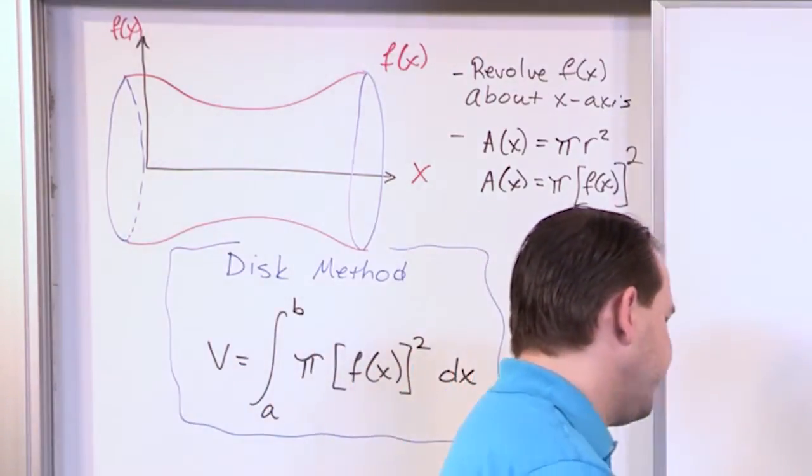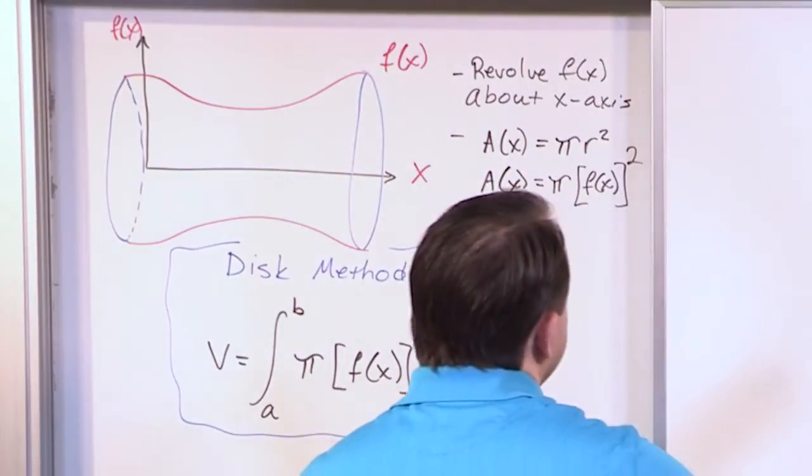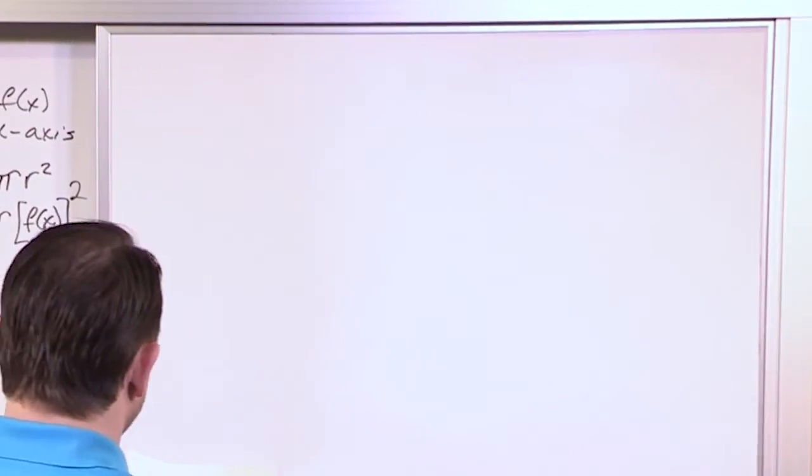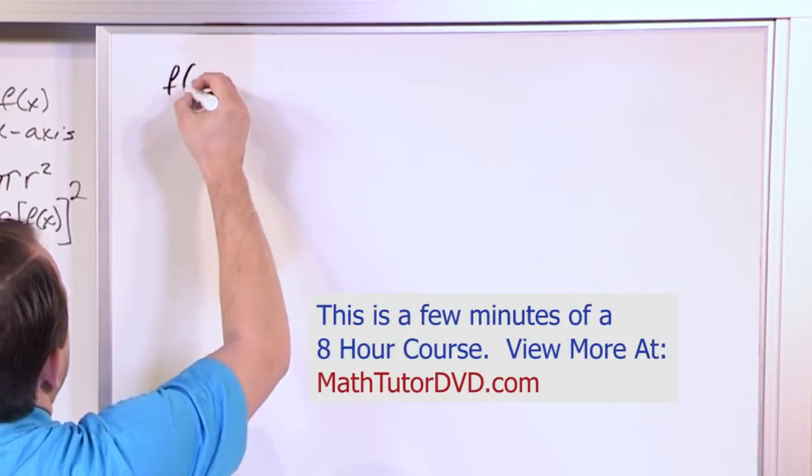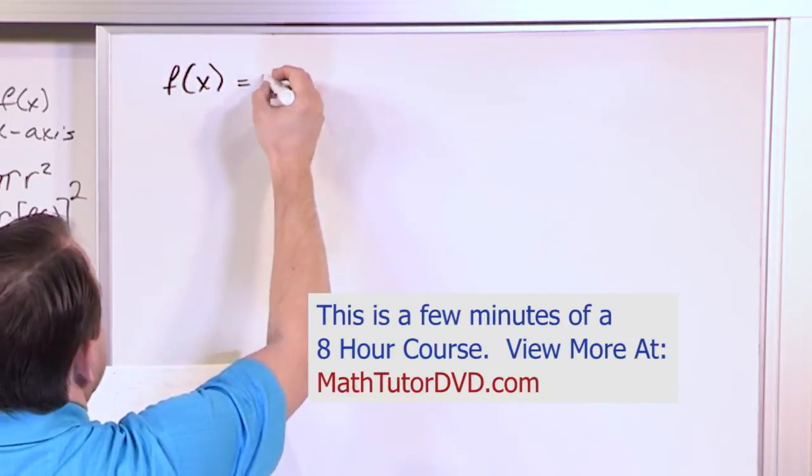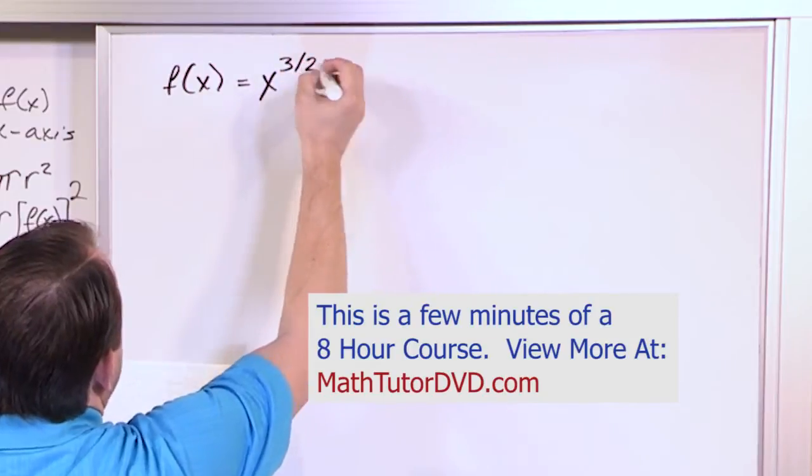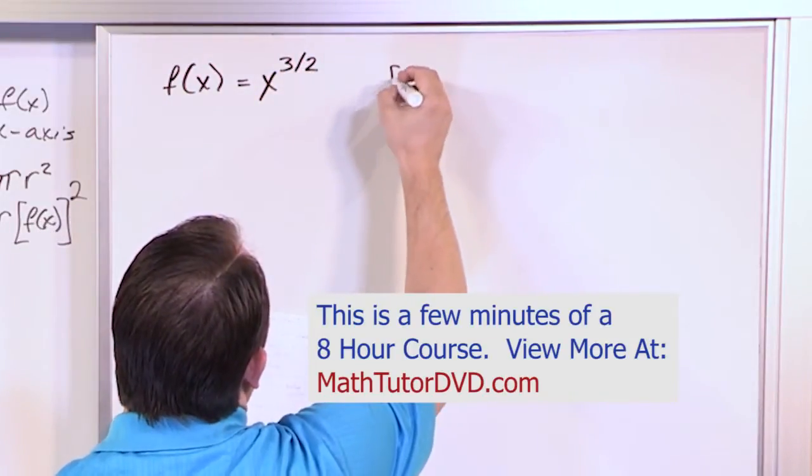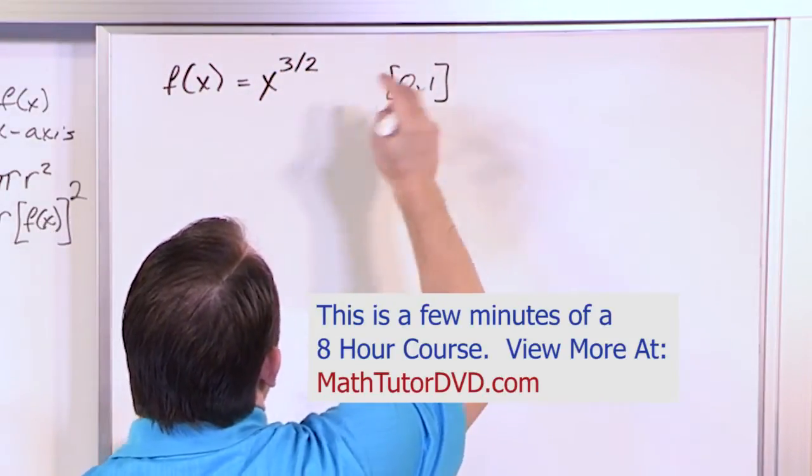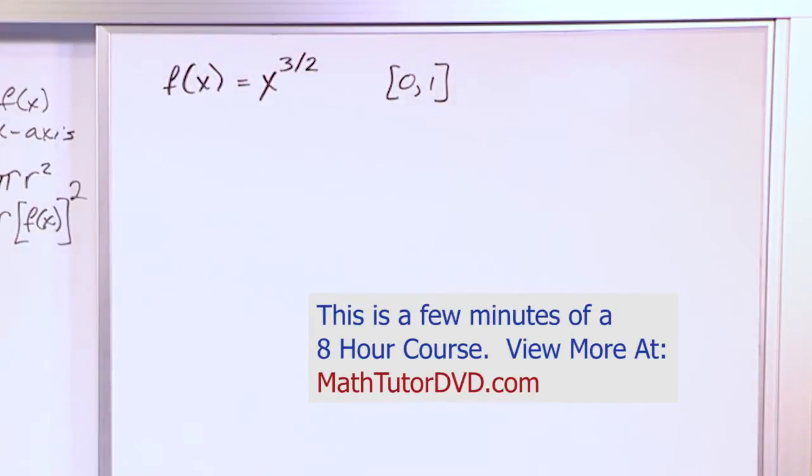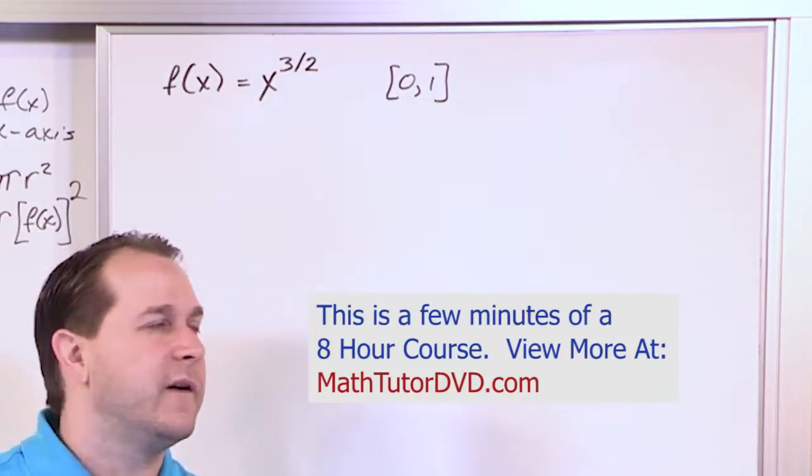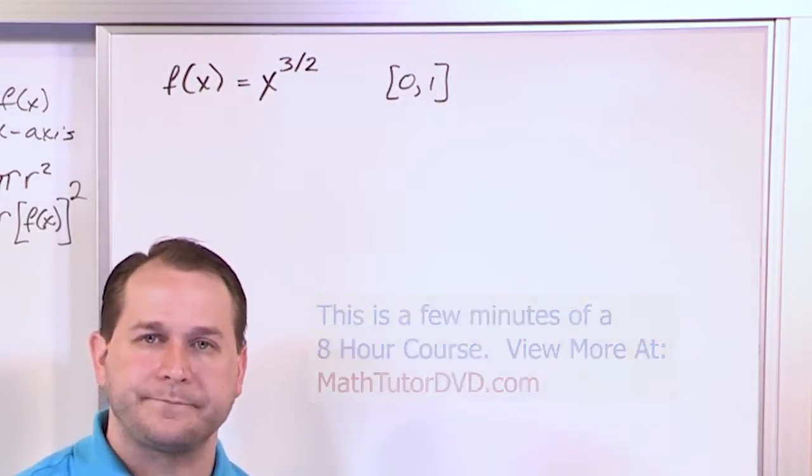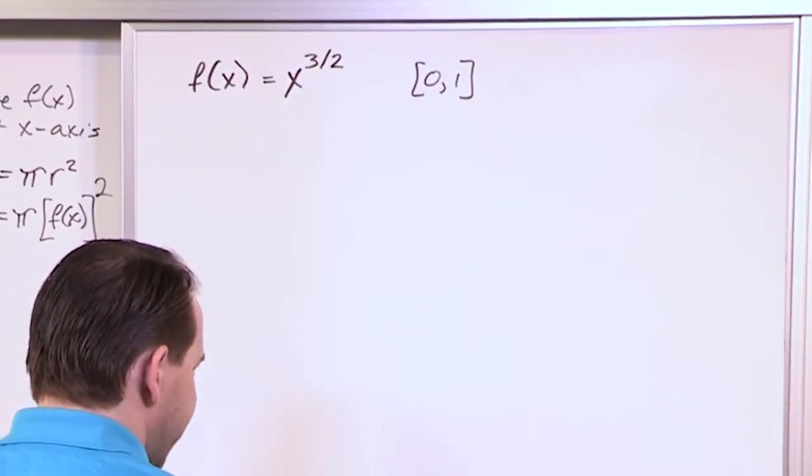So let's go ahead and do a few problems to get some practice with the disk method. So if you have a typical problem, it might say, hey, you have a function f of x, which is x to the three halves, and I only care about the region between zero and one. And this is revolved around the x-axis. Find the volume of the object. That's basically what a problem is going to tell you. Revolve this guy around the x-axis. Find the volume between zero and one.